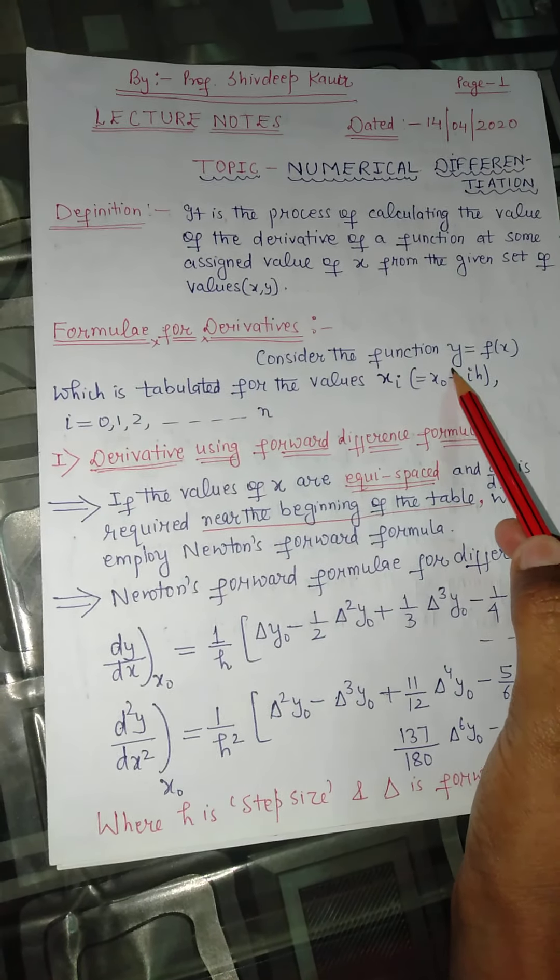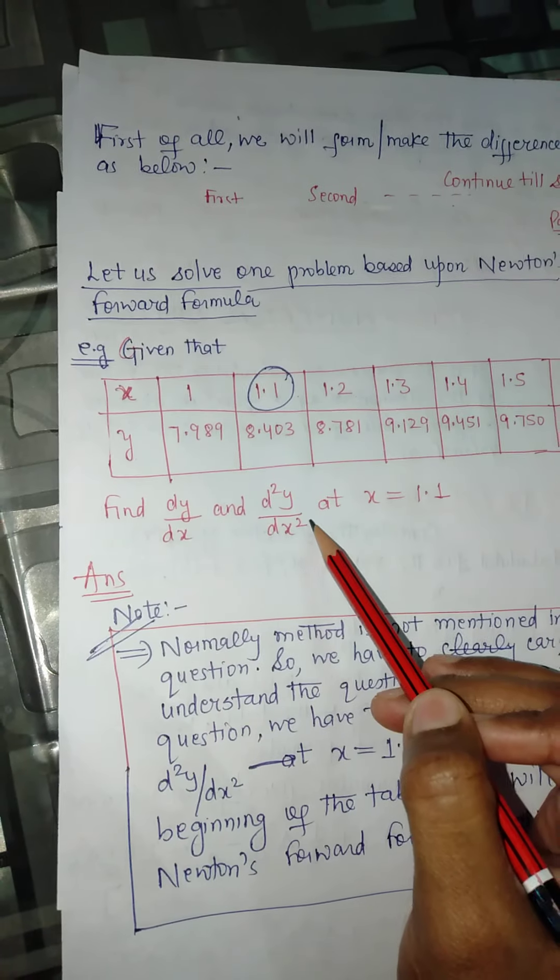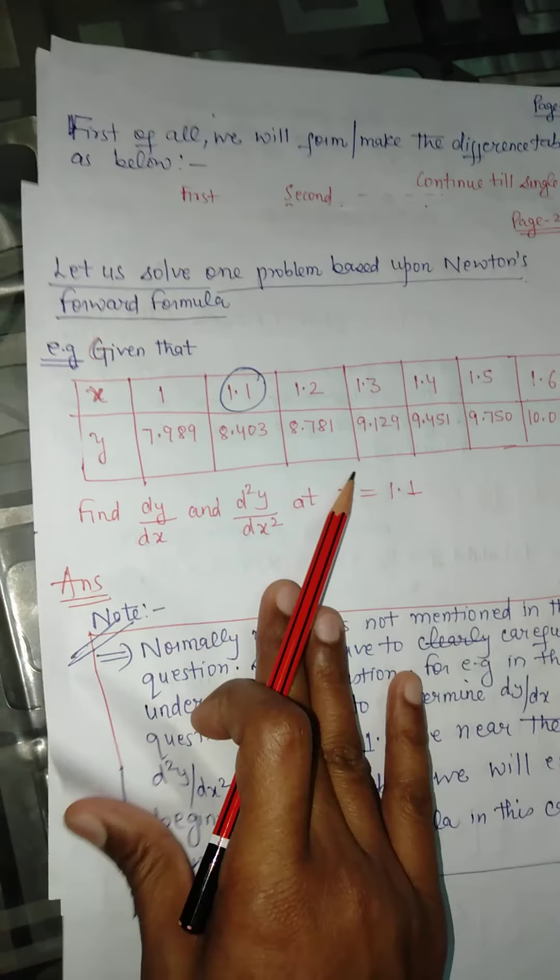Now, if we need to find the derivative using the forward difference formula, we use it when the values of x are equispaced. Equispaced means the data is like: 1, 1.1, 1.2 — the space between points is 0.1. If the values of x are equispaced and dy/dx is required near the beginning of the table, we apply the Newton forward formula. For example, if we need to find dy/dx at the point 1.1, which lies near the beginning of the table, we apply this Newton forward interpolation formula.